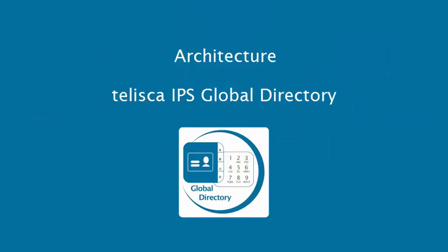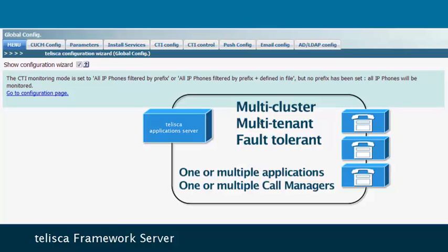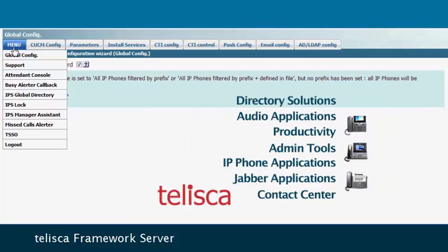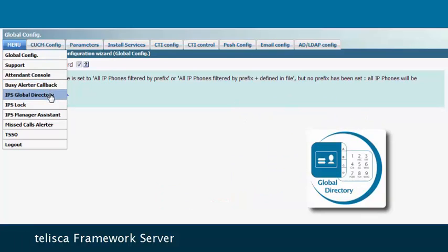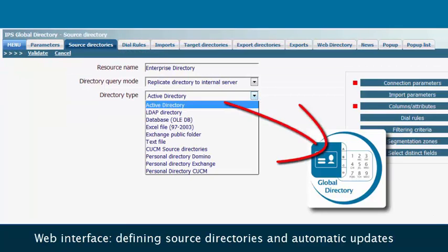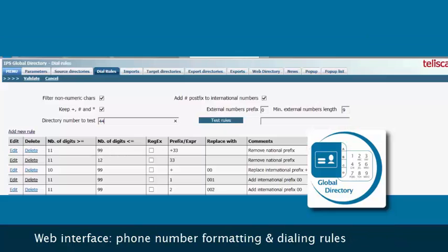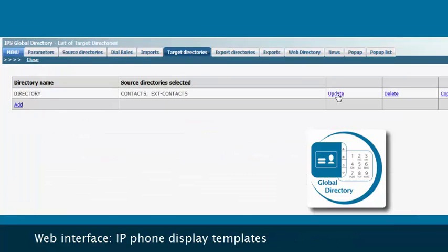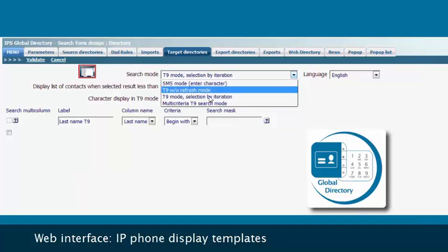The platform for Global Directory is the Taliska framework server, by which all Taliska applications are deployed and managed. Via this web interface, you define the source directories which feed Global Directory — such as Active Directory and other industry standards — which may automatically update Global Directory at defined intervals, along with the rules for handling phone number formats and IP phone templates for the display of directory data.